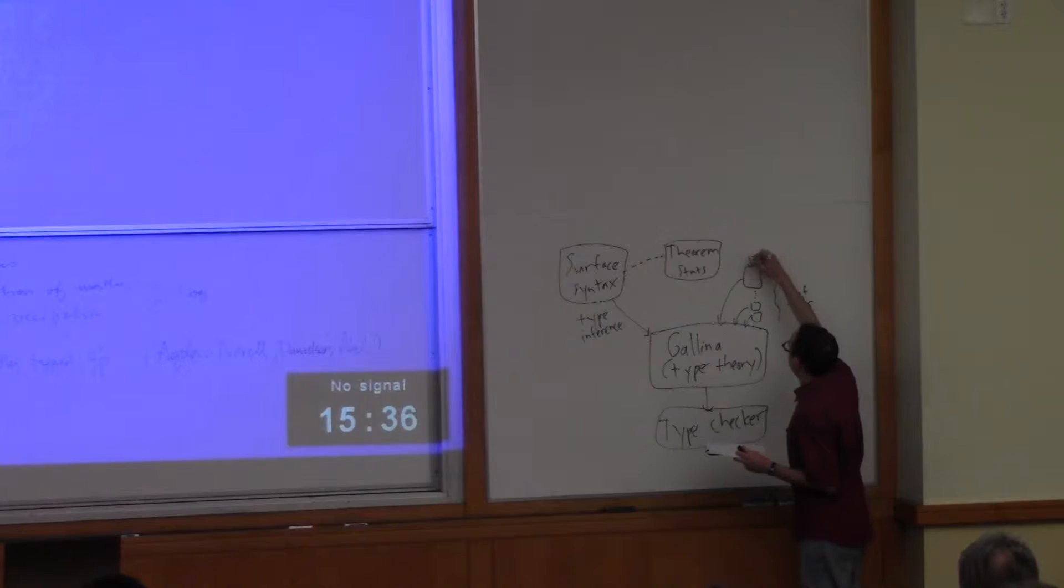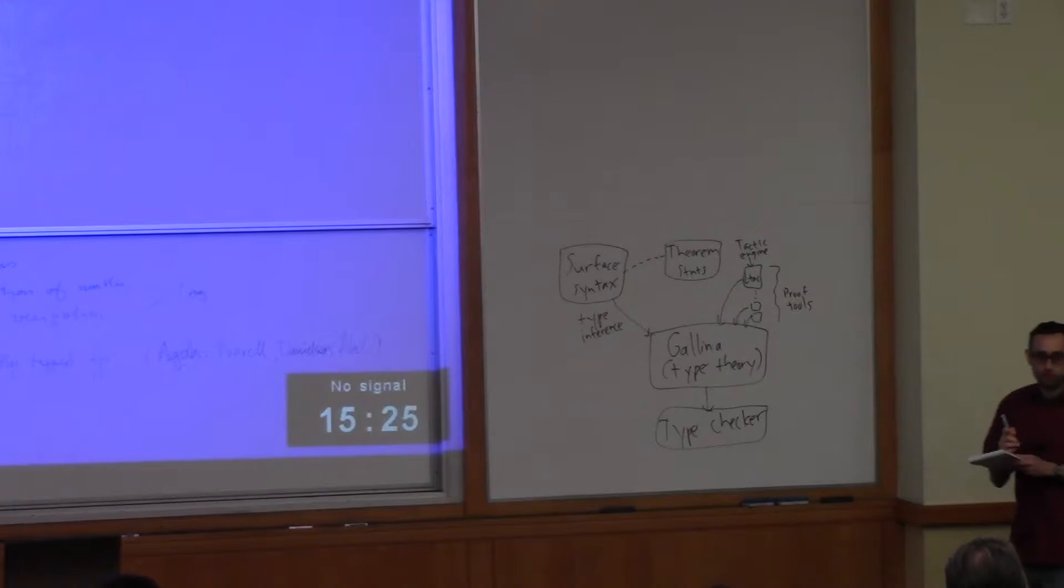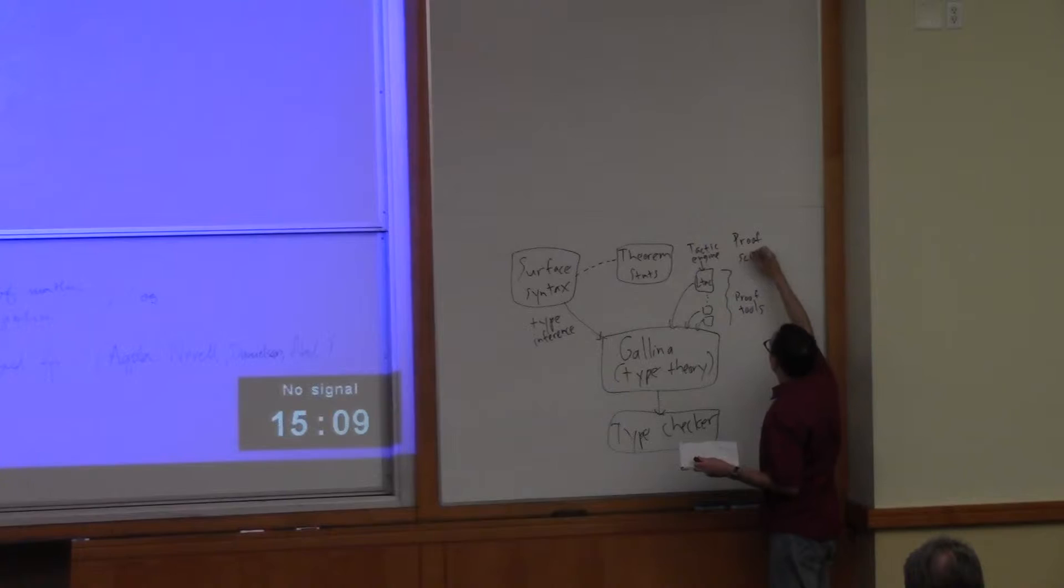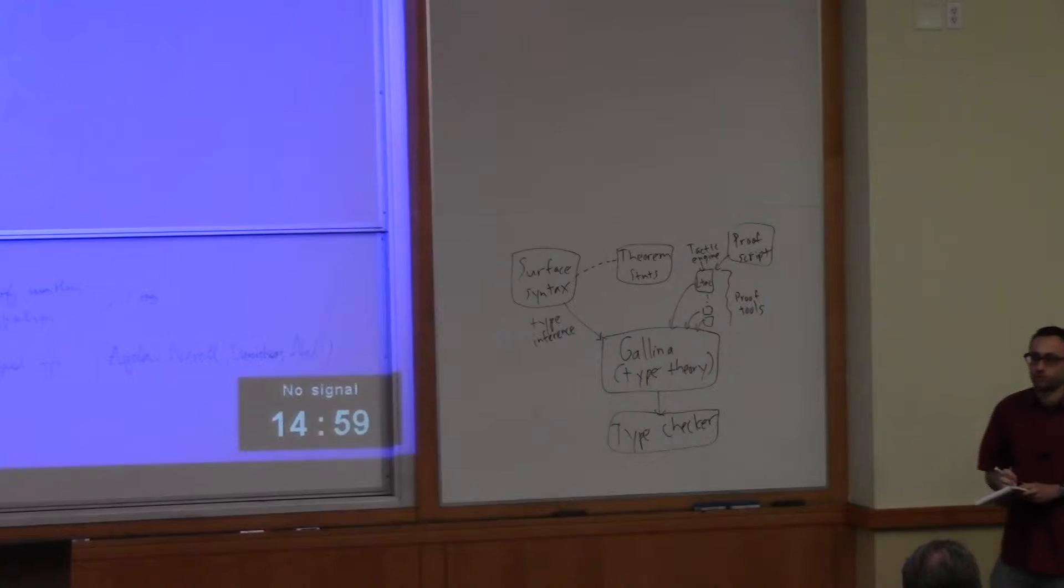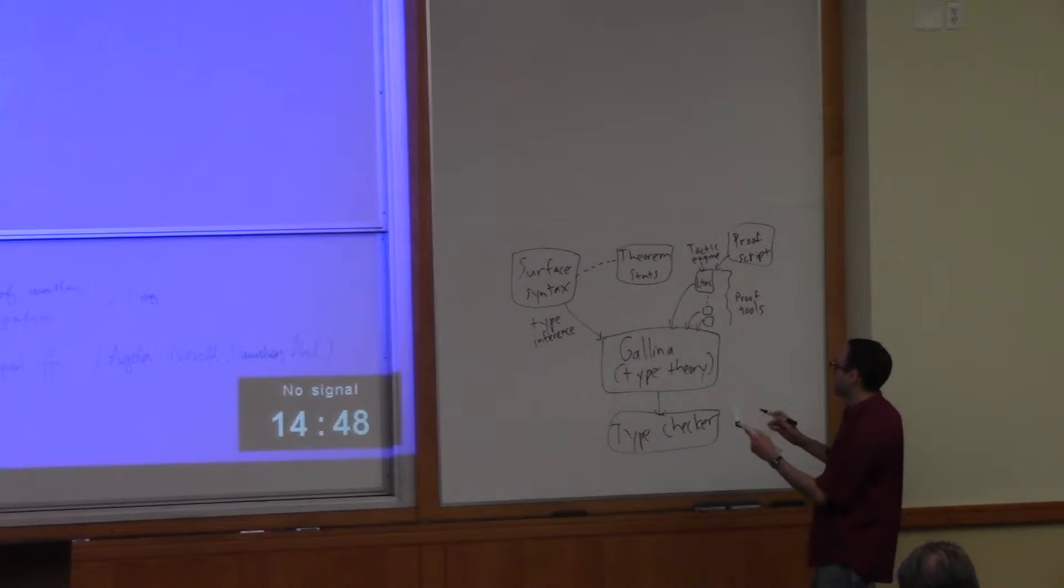And the most important one of these boxes is what I'll call the tactic engine. We have a language called Ltac which is basically a language for writing proofs in a kind of style that transforms one thing you want to prove into some other things that you want to prove which imply the original thing. And so what we do is we write what's called a proof script which feeds into the tactic engine and the proof script can also orchestrate calling other proof tools like SMT solvers or whatever else that have been instrumented to produce these terms in the type theory in the end.